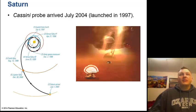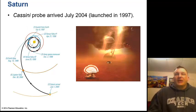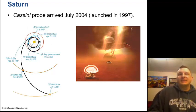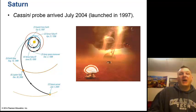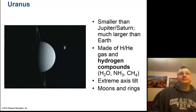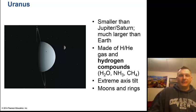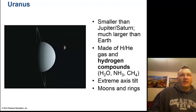The Cassini probe arrived at Saturn in July 2004, launched in 1997 — taking seven years to get there. Imagine using a computer you bought in 1997 and it still works great — that's essentially what we have with Cassini. Next, Uranus — and note the pronunciation: it's 'YOOR-uh-nus.' Smaller than Jupiter and Saturn but much larger than Earth, it's made of hydrogen, helium, and compounds like water vapor and methane. It has an extreme axis tilt of 97 degrees, plus moons and rings.